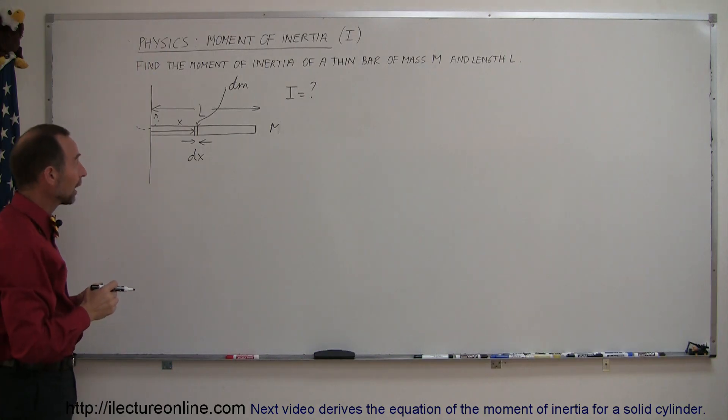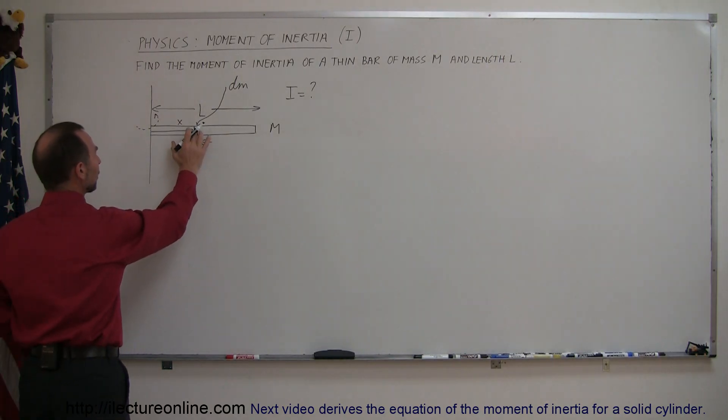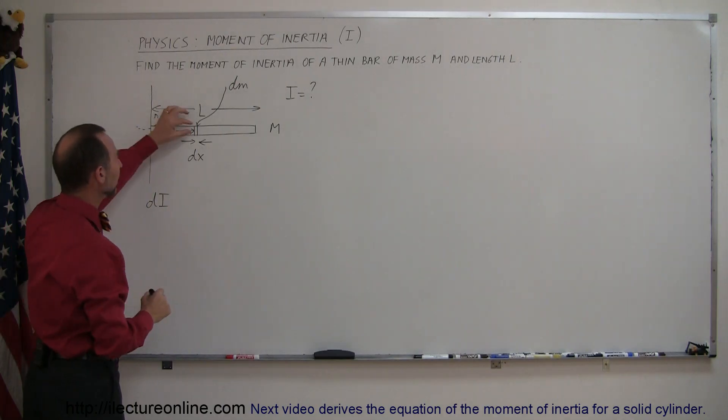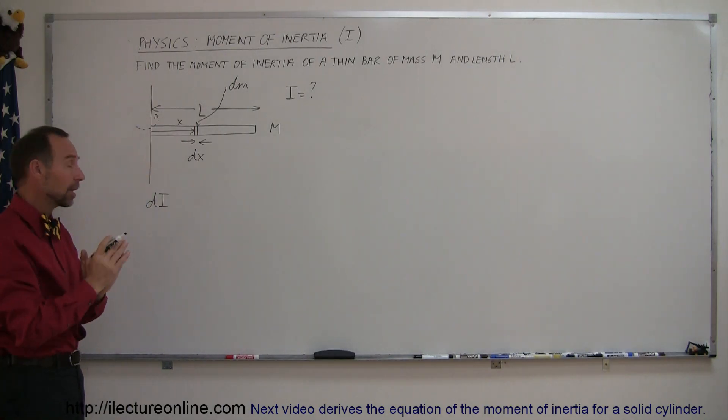So, how do we utilize that information to find the moment of inertia? Well, what we want to do is we want to find the moment of inertia of this little piece right there, so we can say that the moment of inertia belonging to that little piece, let's call it a di, a small amount of moment of inertia.